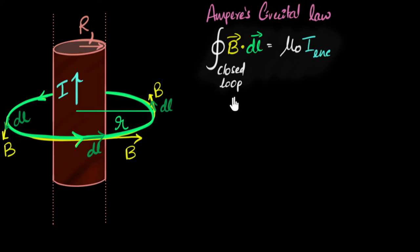And so now the dot product also becomes easier to calculate because B and dl everywhere are in the same direction. So why don't you pause the video now and try yourself what the left hand side eventually simplifies to?